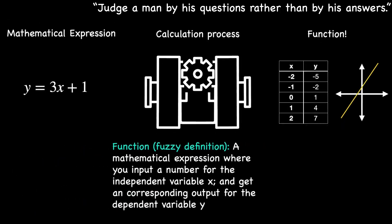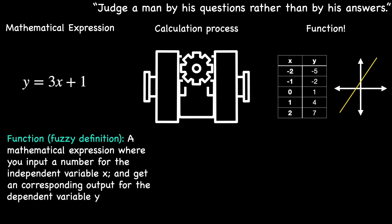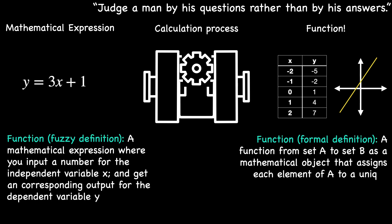Slim's professor defined a function from a set A to a set B as a mathematical object that assigns each element of A to a unique element of B. While this matched Slim's intuitive understanding, there was a key difference. Slim viewed functions through the lens of the calculation process, while the professor's definition abstracted away the specifics of calculation.